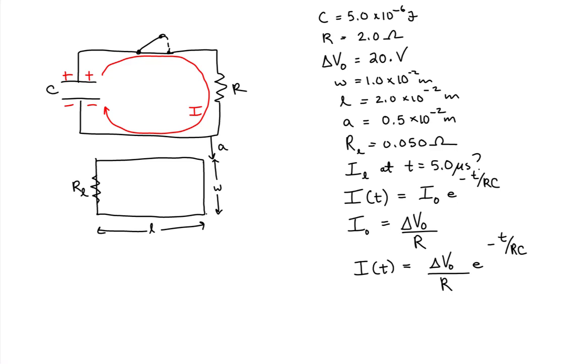Now being a current, this current is going to produce a magnetic field. And it's important to realize this because it is this magnetic field that will induce a current in the loop as the current in the RC circuit changes.